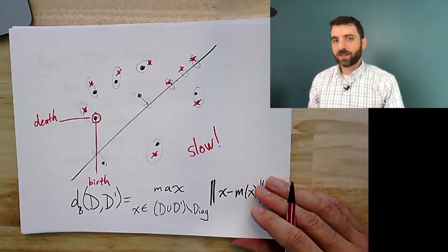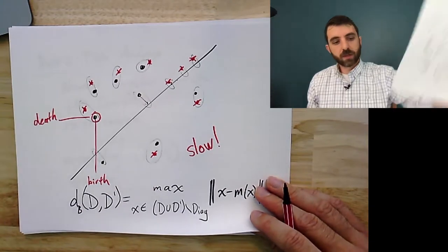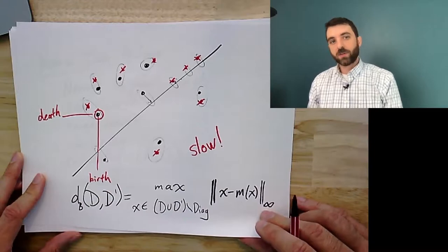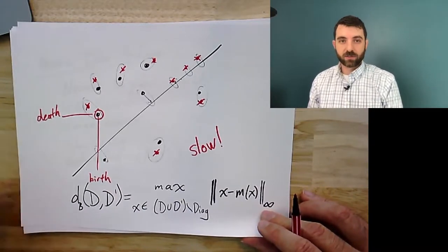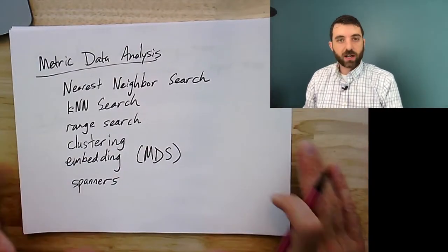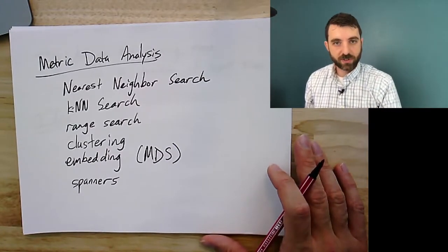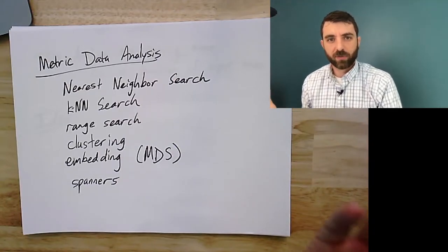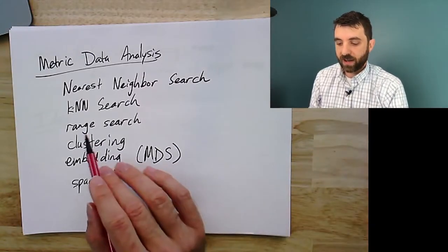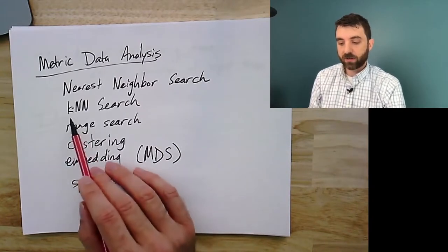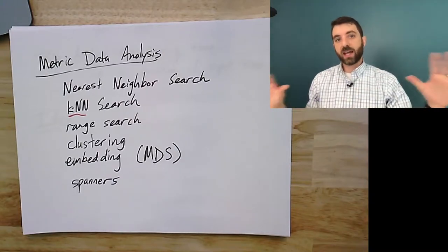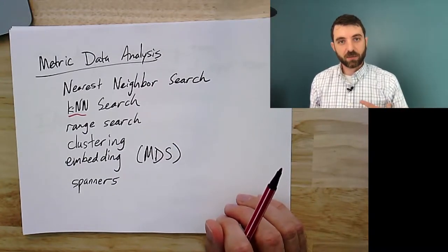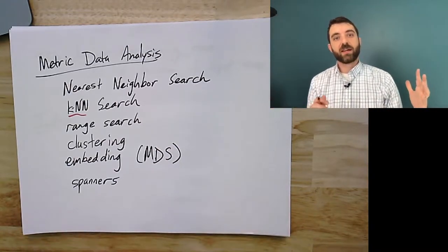It makes sense to try to do something faster. You could approach this two ways: make better matching algorithms, or settle for approximations and do pretty well much faster. The point is to do metric data analysis. Problems we're interested in include nearest neighbor search — given a collection of persistence diagrams and a new one, find which is closest — k-nearest neighbor search for classification, range search, clustering, or even persistent homology of a family of persistence diagrams, which again requires the metric.